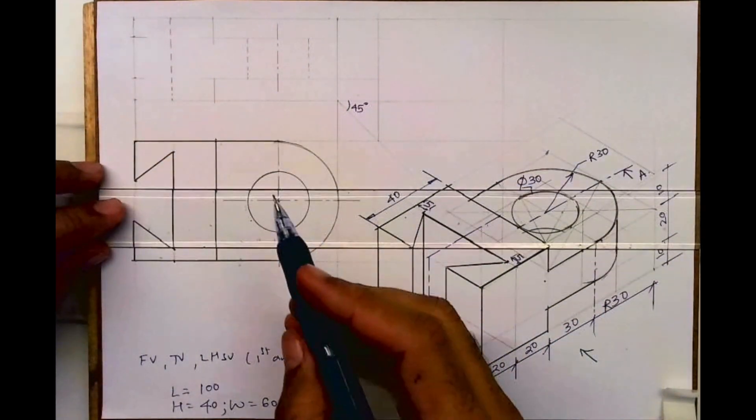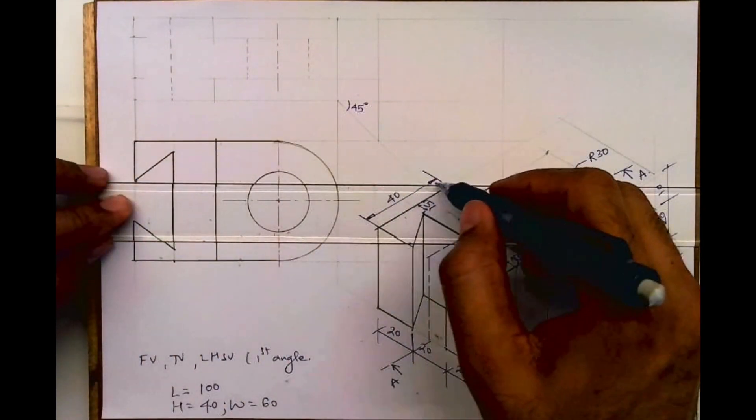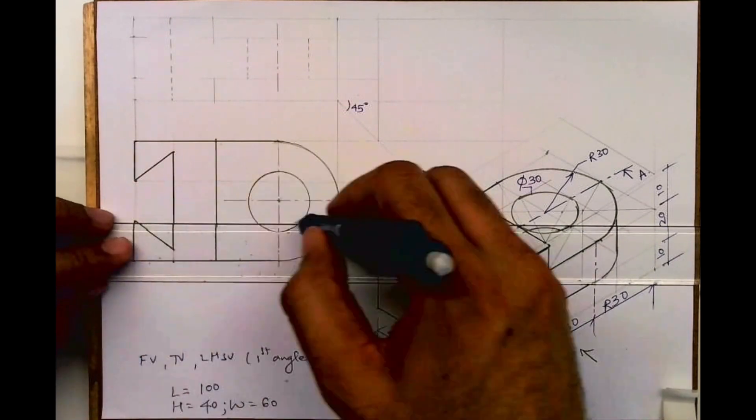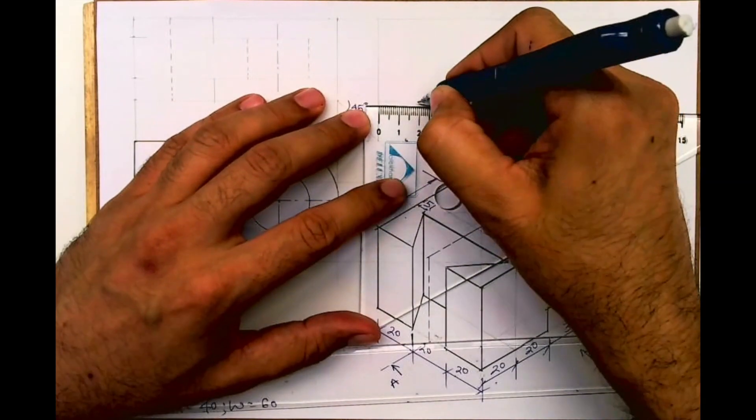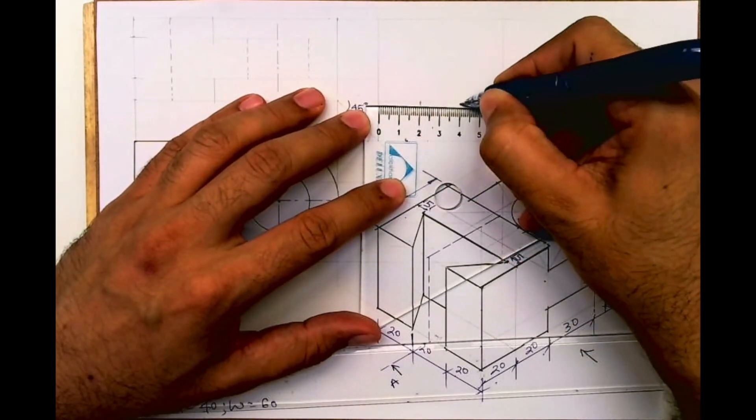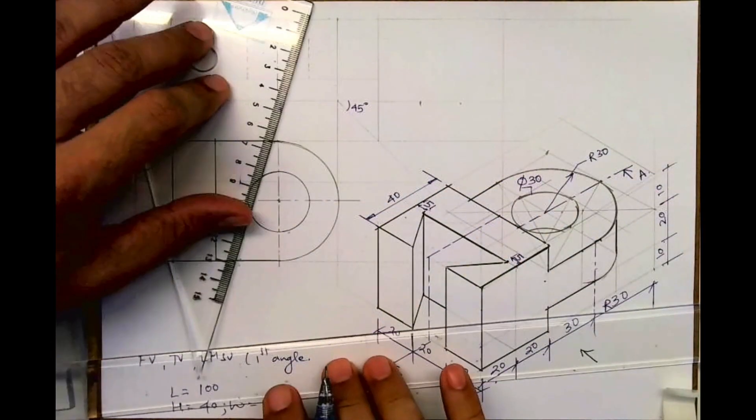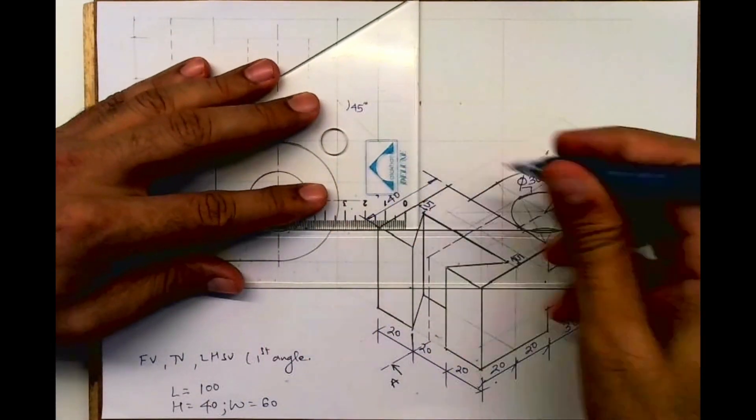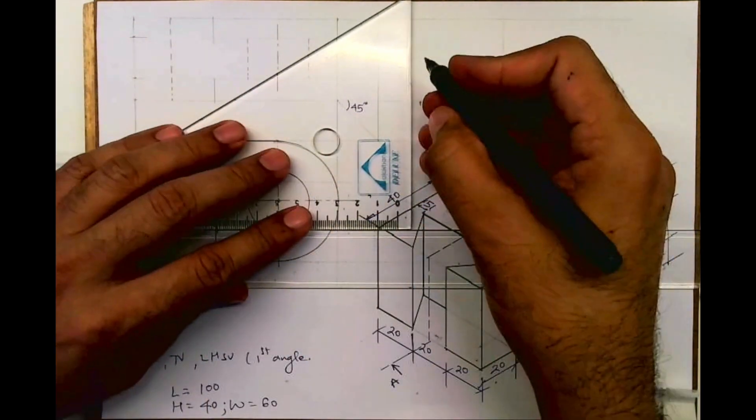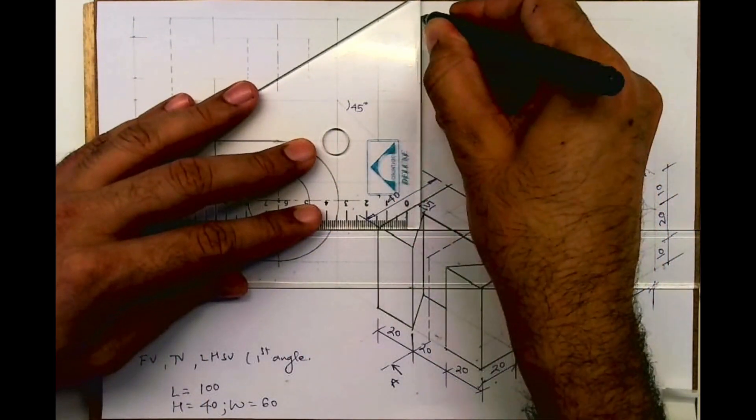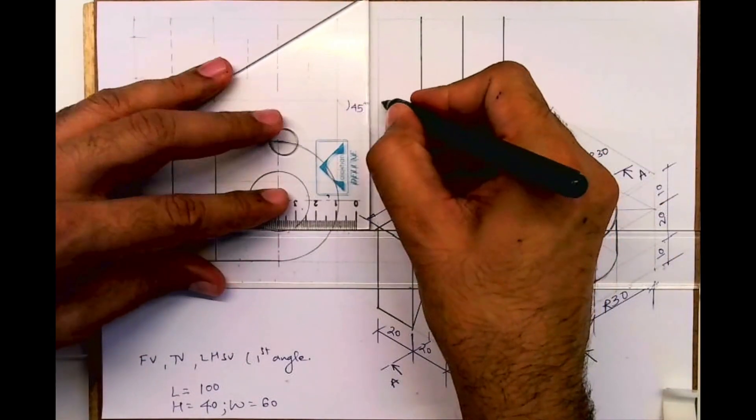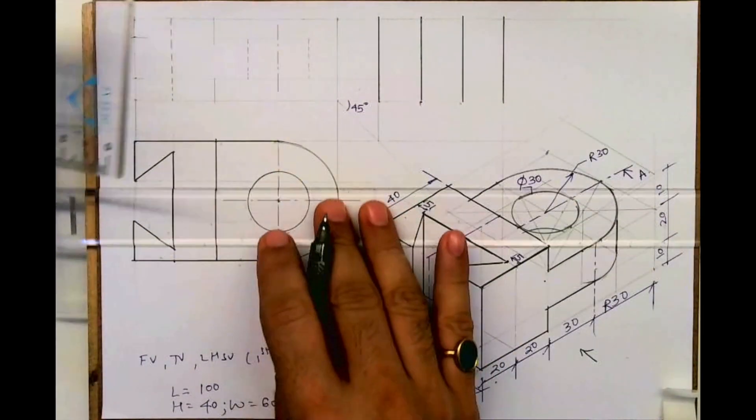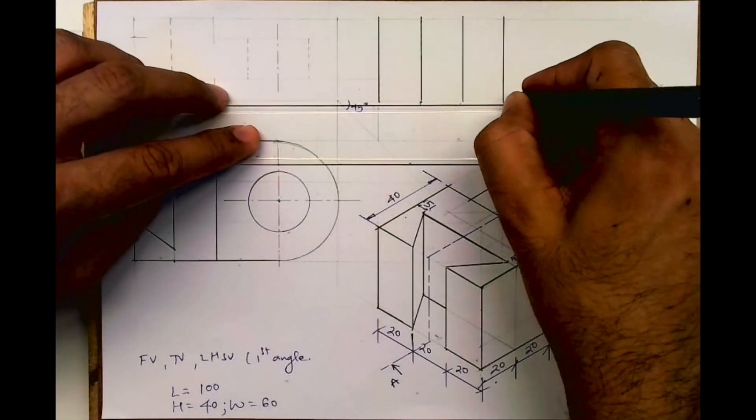Now I will see side view. Side view again I will see three rectangles, 20, 20. It will overlap with my question, so I am taking directly with scale. I am marking 20, 20. So three rectangles like this.